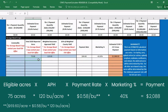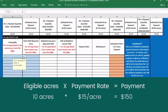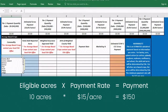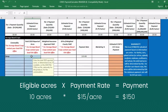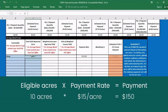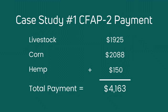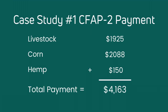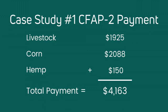This equals a total payment of $2,088. Calculating the payment for the flat rate crop is much easier, as the payment rate is set at $15 an acre. So the farmer would receive a total of $150 by multiplying 10 acres of hemp by $15 per acre. In total, this farmer would receive $4,163 for the three commodities.